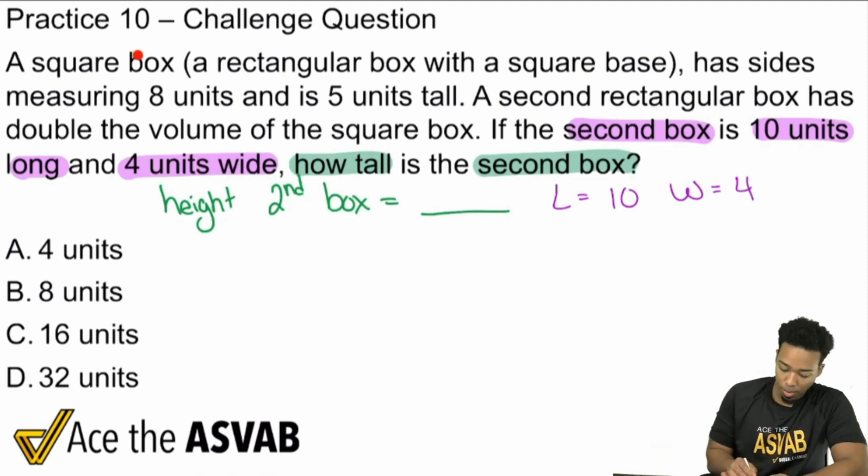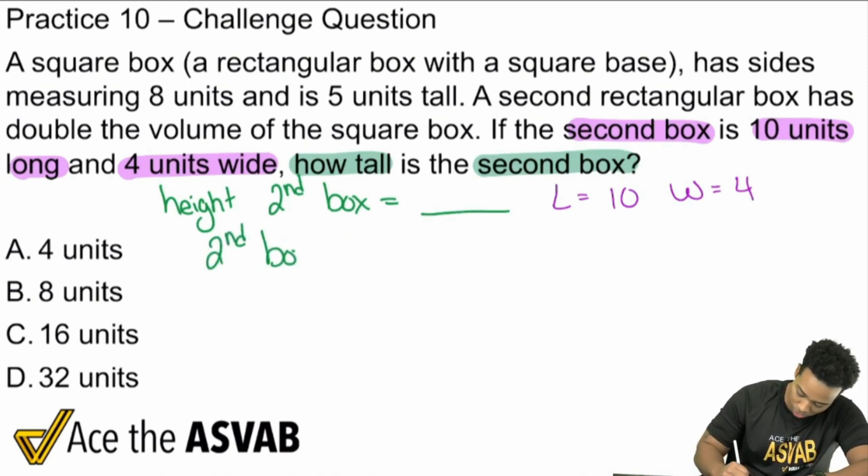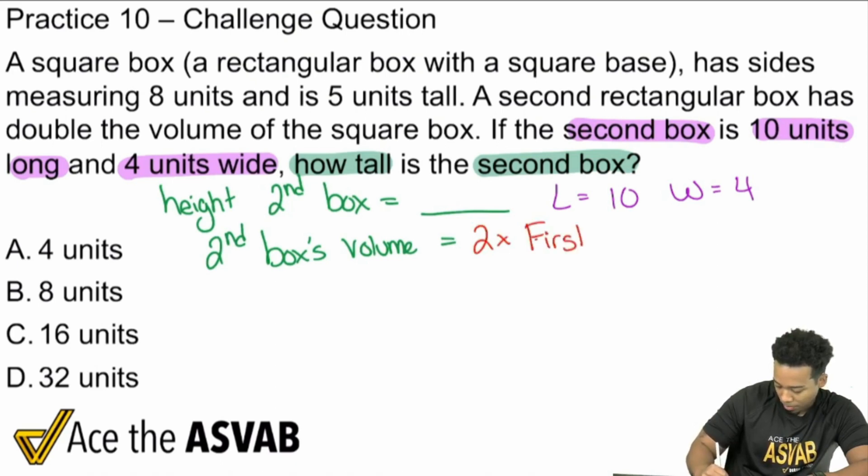So here we go. A square box, so a rectangular box with a square base, has sides measuring 8 units and is 5 units tall. All right, sounds good. A second rectangular box has double the volume of the square box. Right there, a second rectangular box, it's double the volume of the square box. So this second box that we're talking about, we need to write that down. Second box's volume equals double, so twice, two times the first box volume. First box's volume.